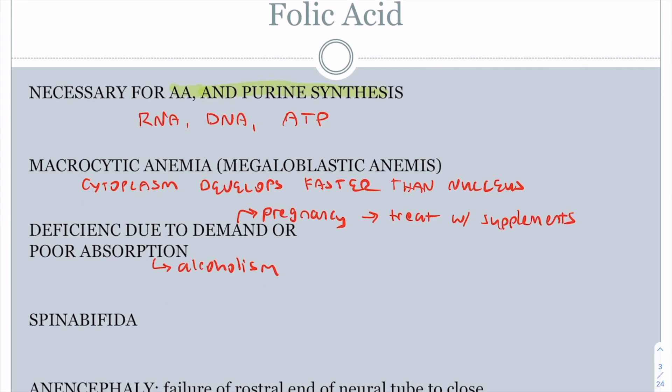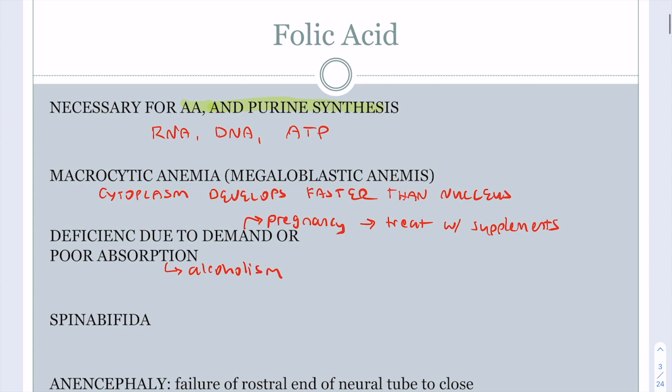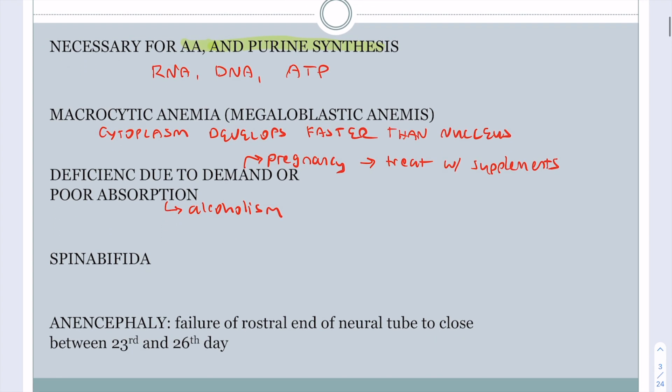Two important diseases associated with folic acid deficiency are spina bifida, which is a neural tube defect, and anencephaly. Anencephaly is the absence of the major portion of the brain and skull, where the rostral end of the neural tube fails to close between the 23rd and 26th day following conception.